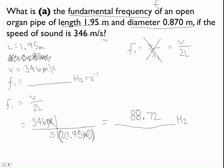And then you should get 88.72. So that's our fundamental frequency, 88.72. And we'll need this for Part B and C, so you'll have it on your paper.